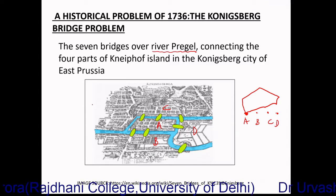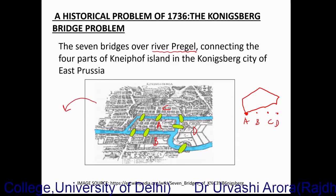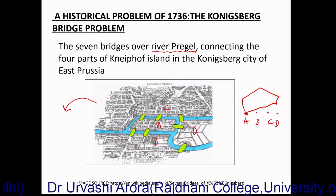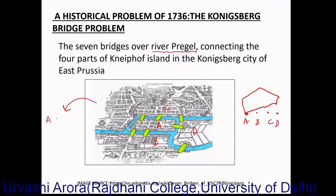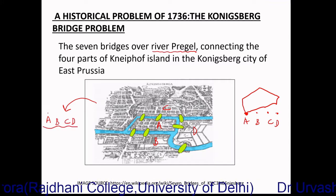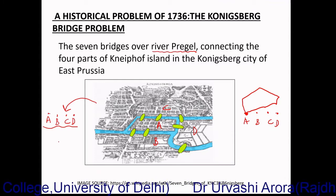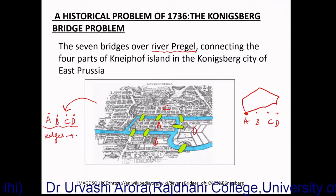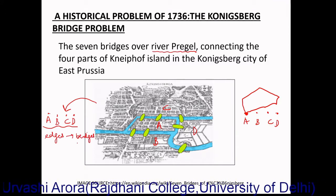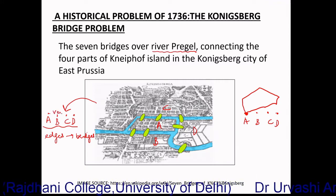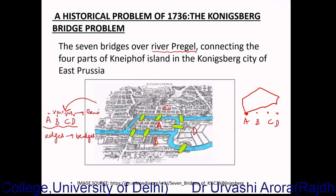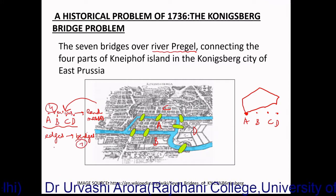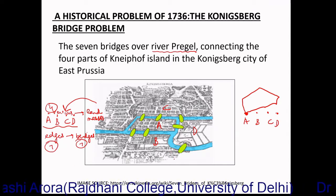What Euler did was he converted the whole figure in the form of a graph. In a graph there are two basic components — vertices and edges. The vertices in the corresponding graph were A, B, C, D corresponding to the four land masses, and the edges corresponded to the seven bridges. So edges corresponded to bridges and vertices corresponded to land masses. Because there were four land masses there were four vertices, and because there were seven bridges there were seven edges — and this is how the graph was formed.